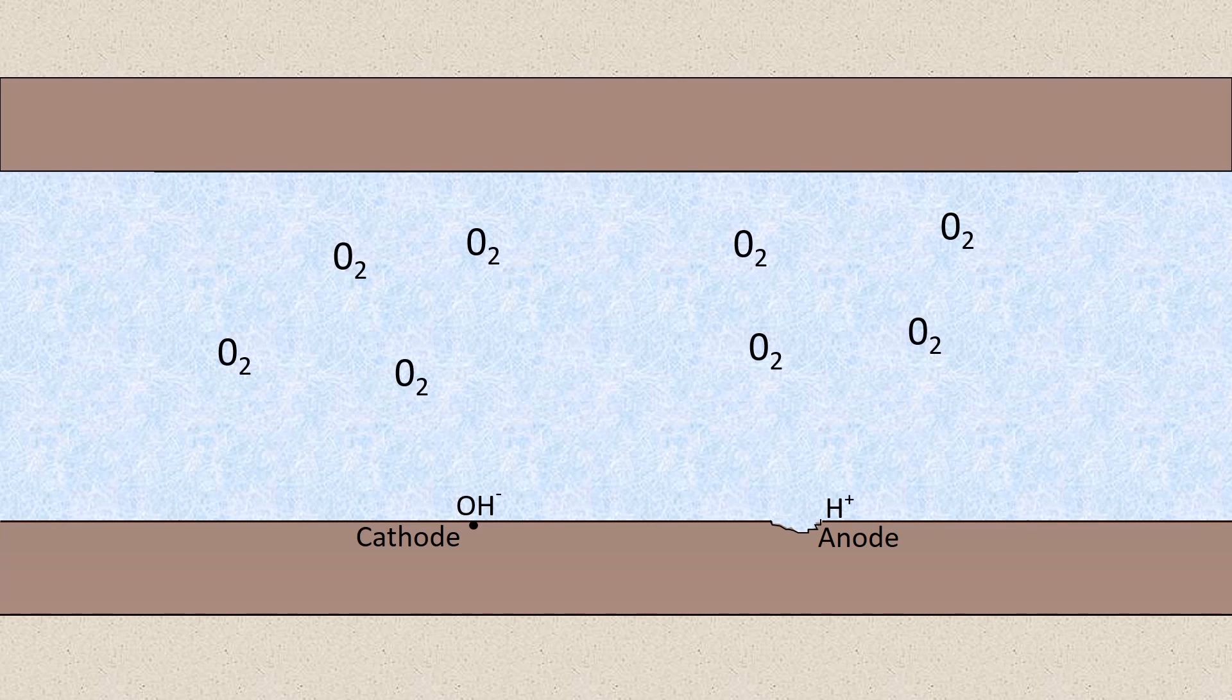Now if there's dissolved oxygen in the water, and most surface water systems will have dissolved oxygen, not all groundwater systems will, but dissolved oxygen in the system will accelerate the rate of corrosion and we'll have more iron atoms leaving the anode or this point where the pit occurs.